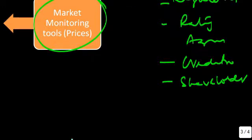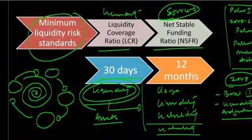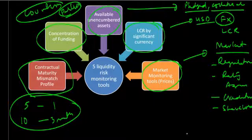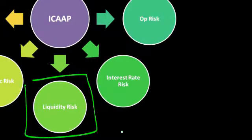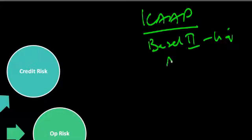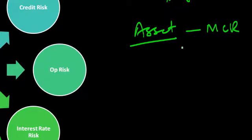So if I take a step back, essentially what we're saying is that you now had two coverage ratios — liquidity coverage and net stable funding — and side by side with these two ratios, you had five additional tools that you could use to monitor liquidity. Combined with the ICAP standard, the internal capital adequacy assessment standard, these additional liquidity adjustments basically filled up a big hole that existed on the liquidity risk side. The focus was that rather than looking at just the asset side, as we did with MCR, it is important for a bank to look at both the asset and the liability side.